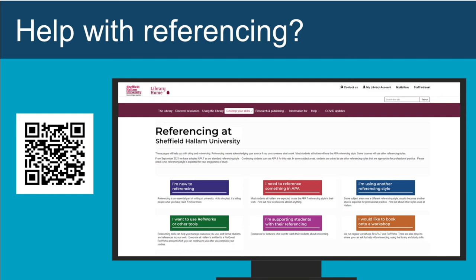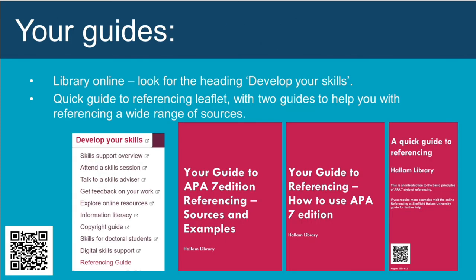The referencing at Sheffield Hallam University online guide has been revised. Check the section 'I need to reference something in APA' and take a look at the help available using RefWorks, the referencing management software. You can also book to attend a referencing or RefWorks workshop. Remember to click on the heading 'Develop your skill' to find the updated online referencing guide. There are also two new guides and a new leaflet entitled 'A Quick Guide to Referencing' available as downloadable PDFs.